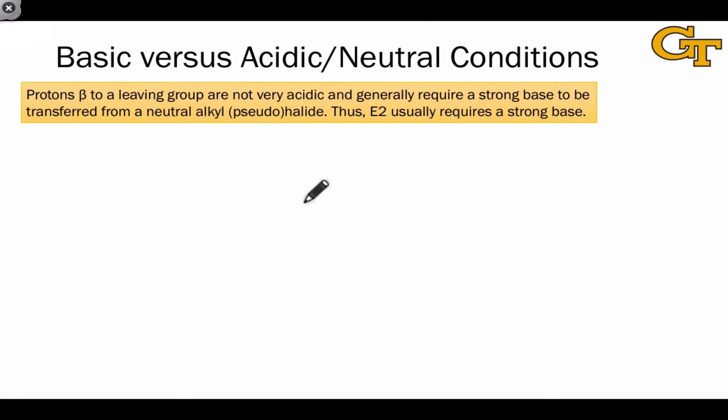If you look at the pKa of a proton in an alkyl halide beta to the carbon bearing the halide or pseudohalide, you'll find that they're actually not very acidic. In general, to deprotonate at this position without forming some kind of much more electrophilic intermediate first, we need a strong base.